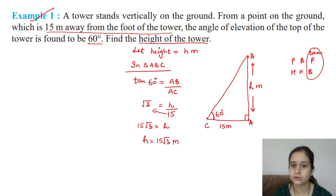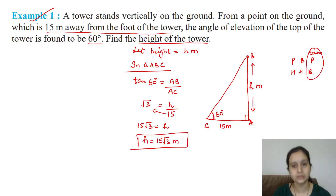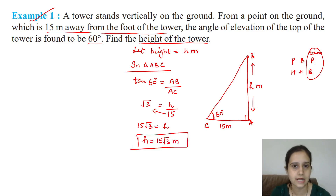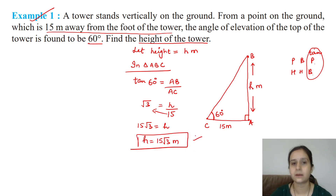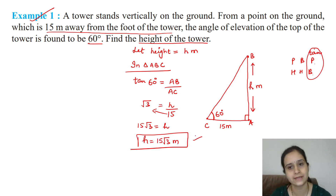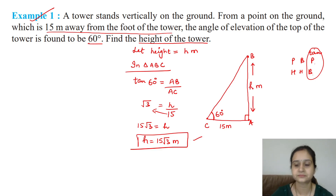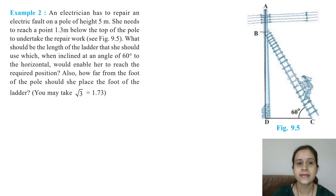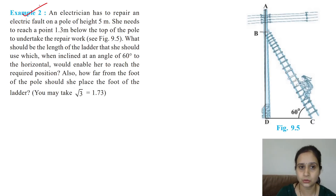In some questions you are given the value of √3, so you can compute the numerical answer. If it is not given, you can leave the answer as 15√3 meters. Let's move on to Example 2.